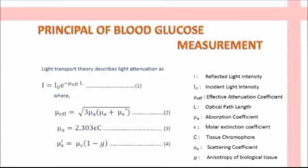Now we will see the actual principle of blood glucose measurement. According to light transport theory, I equals I-naught into e raised to minus mu-effective into L, where I is the reflected light intensity, I-naught is the incident light intensity, mu-effective is the effective attenuation coefficient, and L is the path length. The effective attenuation coefficient depends on the absorption coefficient as well as the scattering coefficient of the cell.